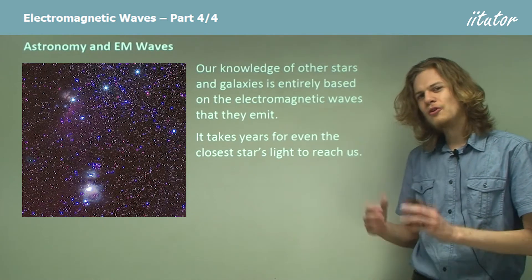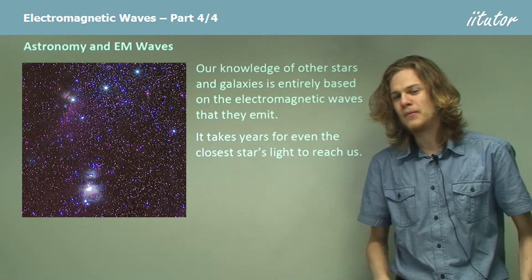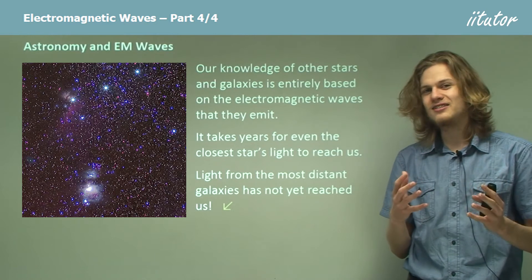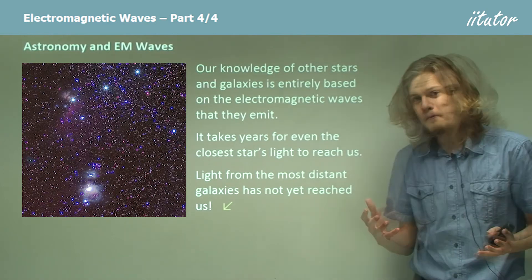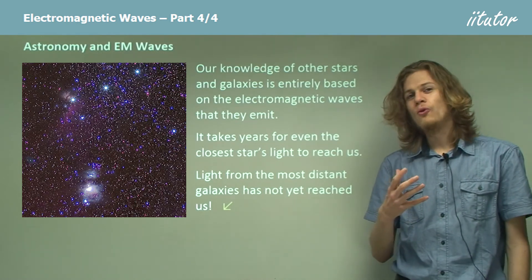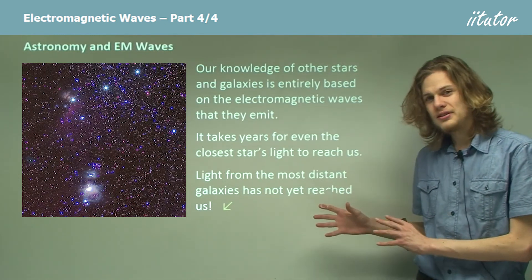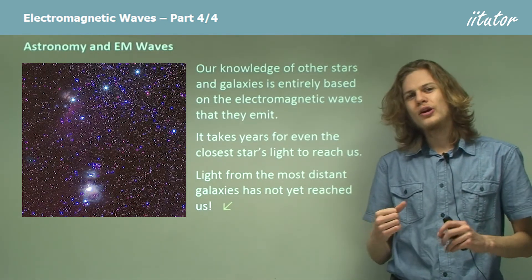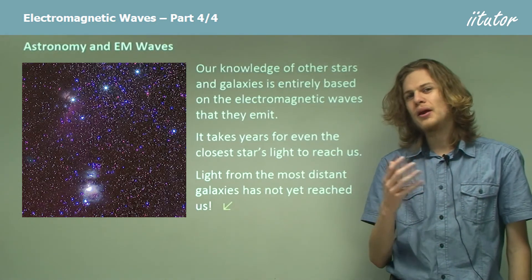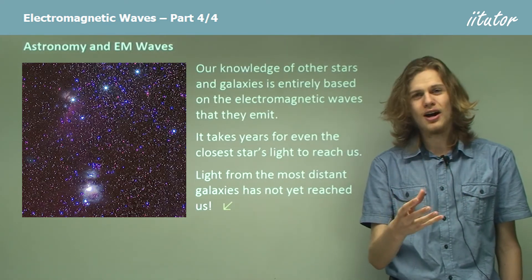So what if we go further back? What if we go to stars that are not closest to our Sun? Well, it turns out that if we look at the very most distant galaxies, we don't see anything because it would take longer than the age of the universe for light from those galaxies to reach us. We know they're probably there, but we'll never be able to see them simply because the light from those galaxies has not had time to reach us.